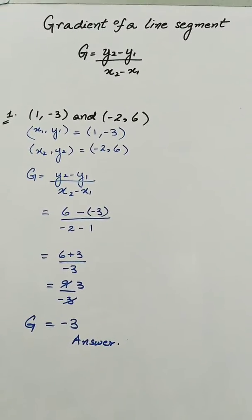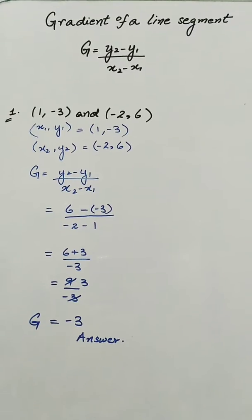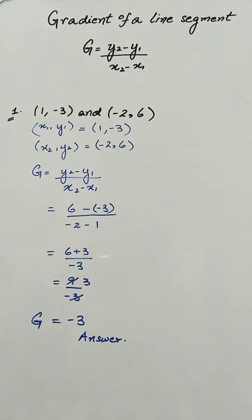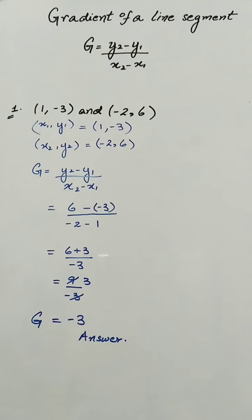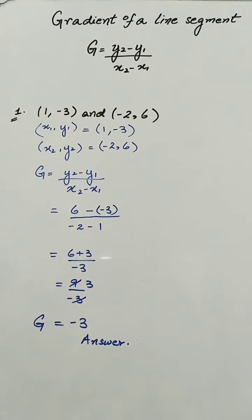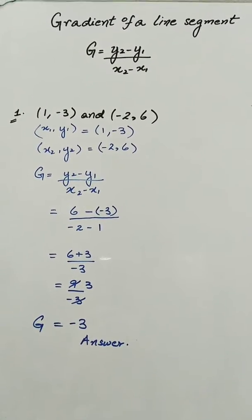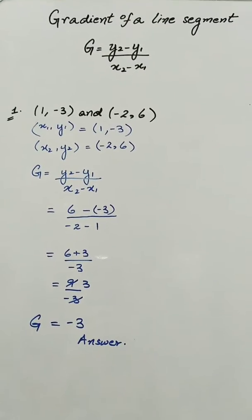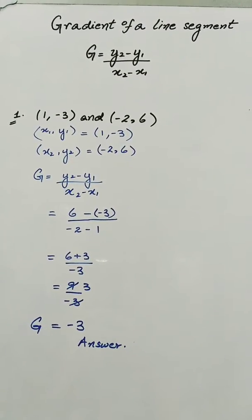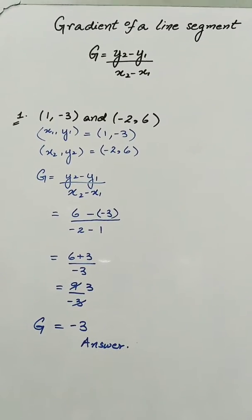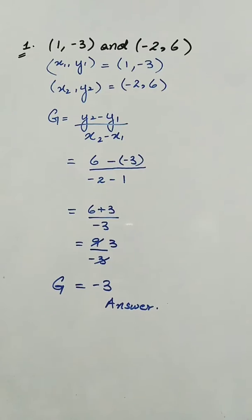Hello and welcome. In today's lesson, we will learn about the gradient or slope of a line segment. The formula for finding out the gradient of a line segment is g = (y2 - y1) / (x2 - x1), where x1, y1 are the coordinates of one point and x2, y2 are the coordinates of the second point.